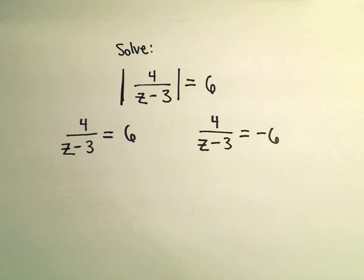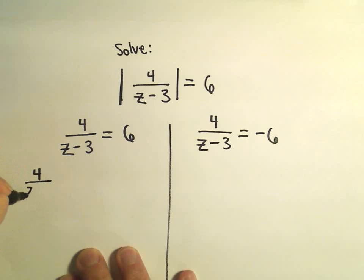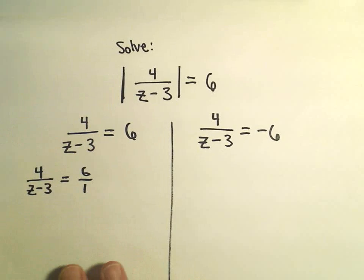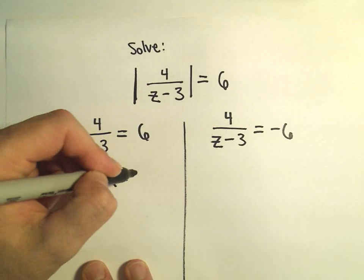Okay, so to solve these, let's look at the one on the left side first. Probably what I would do here to get started is to get rid of this z minus 3 that's on the left. You can multiply both sides by that quantity, z minus 3.